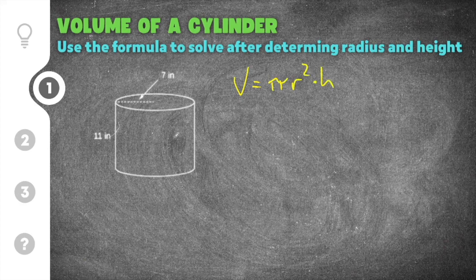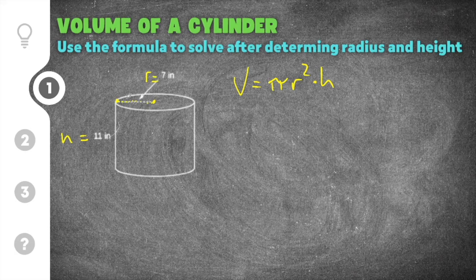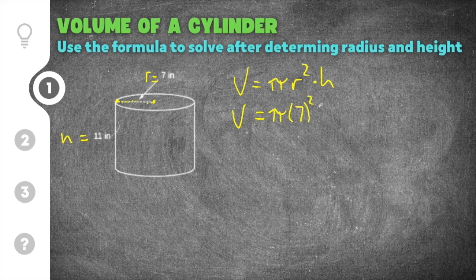We just have to determine which measurement is the height and which is the radius. The height is the distance from one base to the other, so that distance is 11 inches — this has to be the height. The radius is the distance from the center of one of the bases to the edge, so radius is 7 inches. I can now substitute those into the formula: pi times 7 squared times 11.